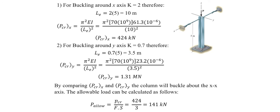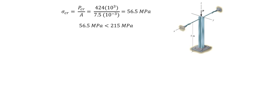The allowable load can be calculated as: allowable load equals critical load over factor of safety equals 424 over 3 equals 141 kilonewtons. We need to verify that Euler's equation is valid by comparing the critical stress to the yield stress. The critical stress equals 424×10³ over 7.5×10⁻³ equals 56.5 MPa. Since 56.5 MPa is less than the yield stress of 215 MPa, Euler's equation is valid.